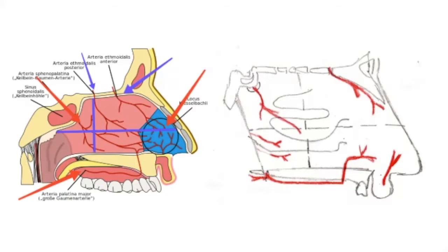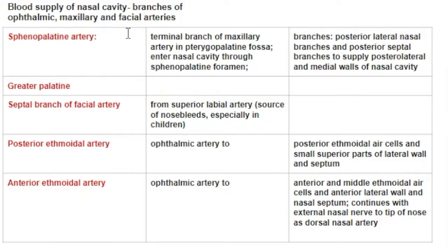With this we complete our branches from the external carotid system. Moving on to the branches from the internal carotid artery — these are the posterior and anterior ethmoidal arteries, both of which are branches of the ophthalmic artery arising in the cranial cavity.